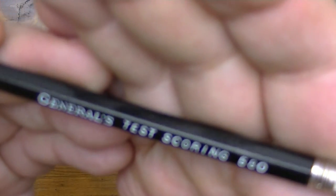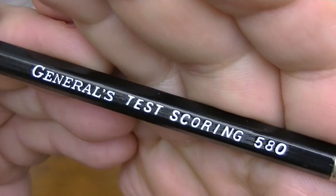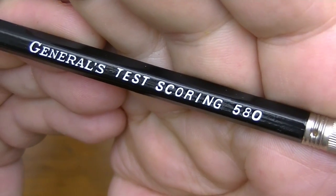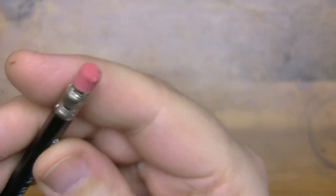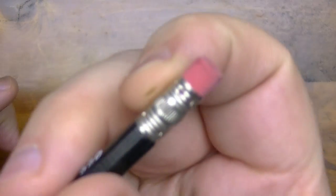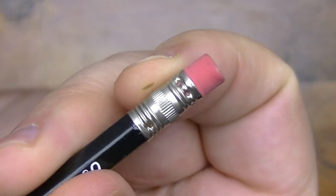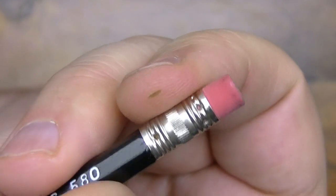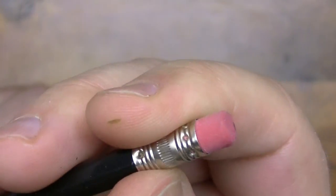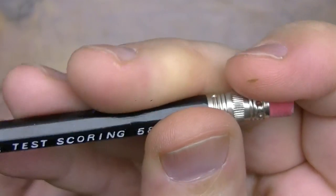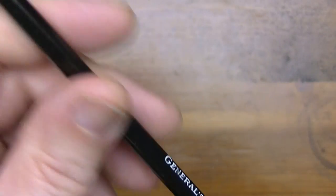Alright. Well, here we take a look at it close up. The white lettering says, clearly, General's Test Scoring 580. And you can see the ferrule here, it's kind of a silverish ferrule. Kind of basic, with a basic pink eraser, no flare, no flash.